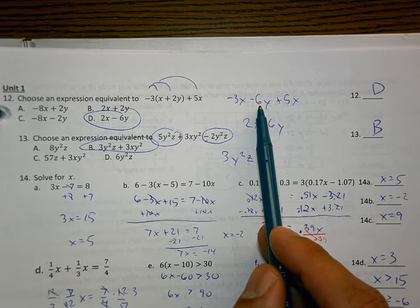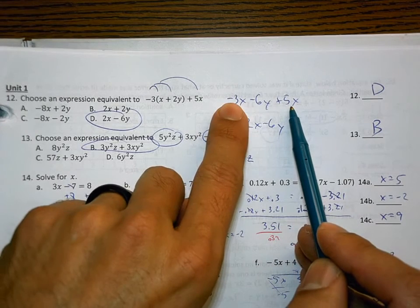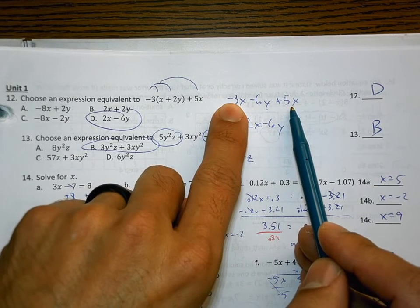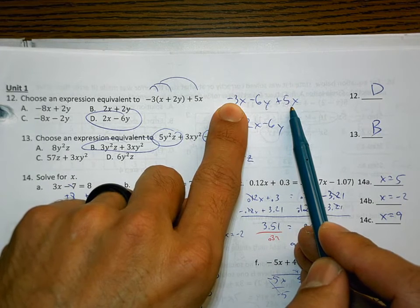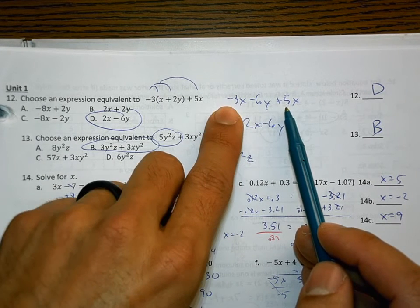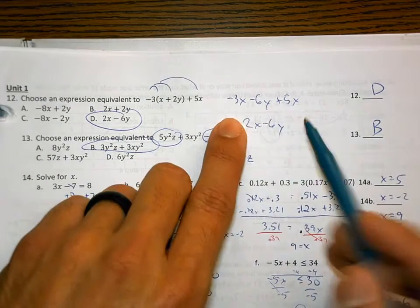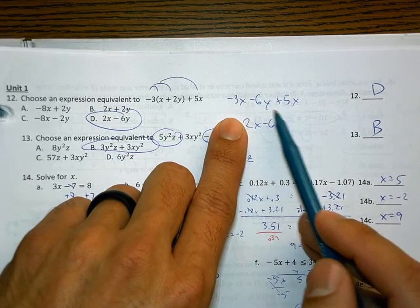What some people were doing was when they had the negative 3x and the positive 5x, some people were changing the signs of those two things. If these are on the same side of the equal sign, well, there is no equal sign over here. You just put these two things together.